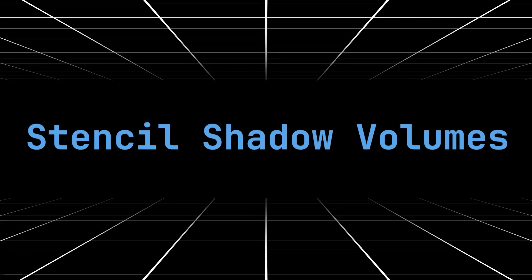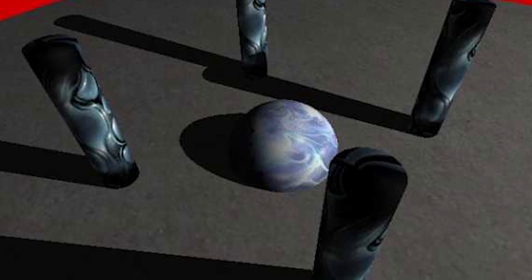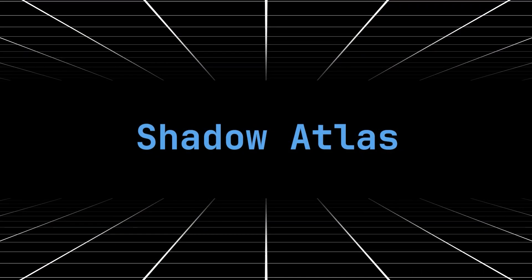Stencil shadow volumes project the silhouette of an object onto the stencil buffer. It works quite well for hard shadows but cannot do soft shadows. Popularized in id Tech with Doom 3. Shadow atlases are a must if you want per-light shadow casting. They are usually constructed so that lights closest to the camera have the highest resolution in the shadow atlas, and the further away they are, the lower resolution they get.